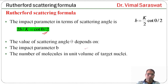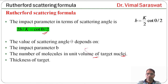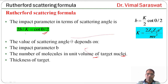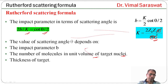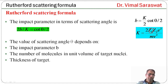The key quantities involved are: the number of molecules in unit volume of target nuclei, and the thickness of the target. Here k equals 2·Z₁·Z₂·e² / (mv²), where e is the charge of electron, m is the mass of the alpha particle, v is the velocity of the alpha particle, Z₁ is the atomic number of the nuclei, and Z₂ is the atomic number of the alpha particle.